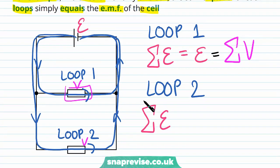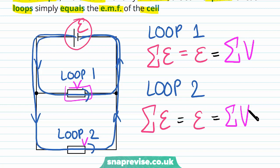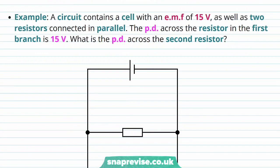Applying Kirchhoff's second law to loop two: the sum of the EMFs in loop two equals the EMF of the same single cell, which is E — the same total EMF as loop one. The sum of the EMF in loop two equals the sum of the potential differences of the components in that loop, and in loop two we've only got one resistor to consider. We only consider the components in that particular loop.